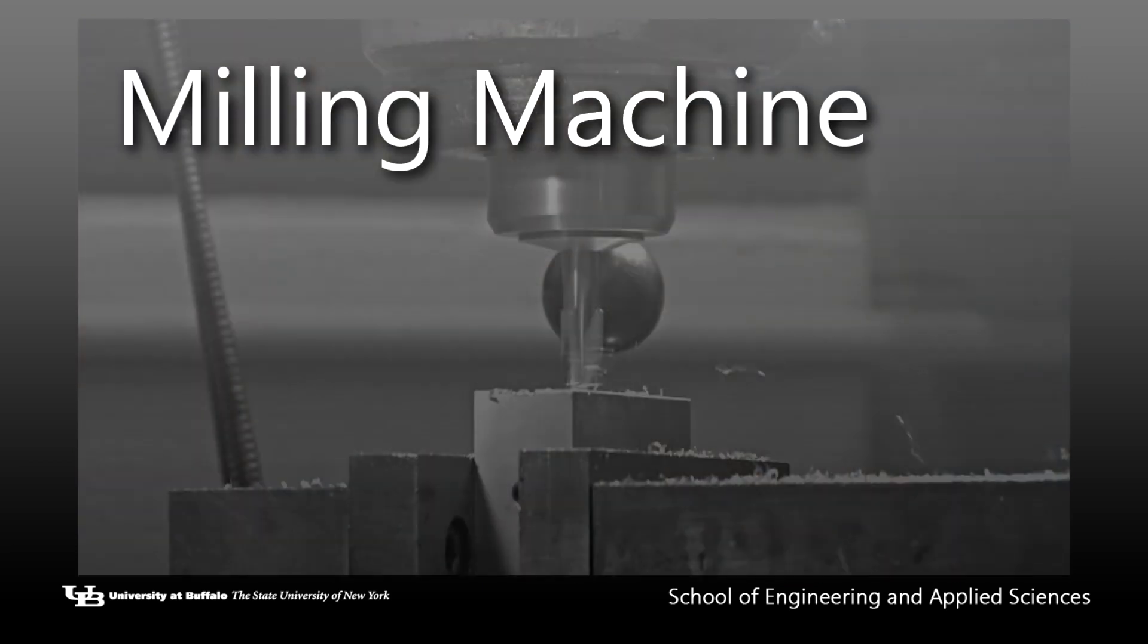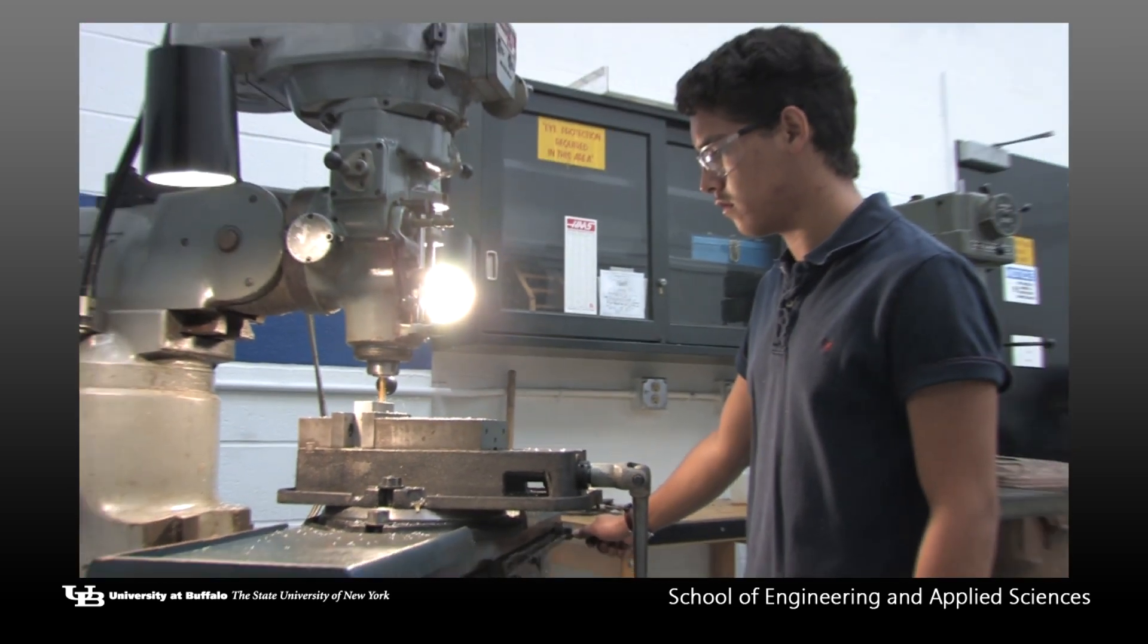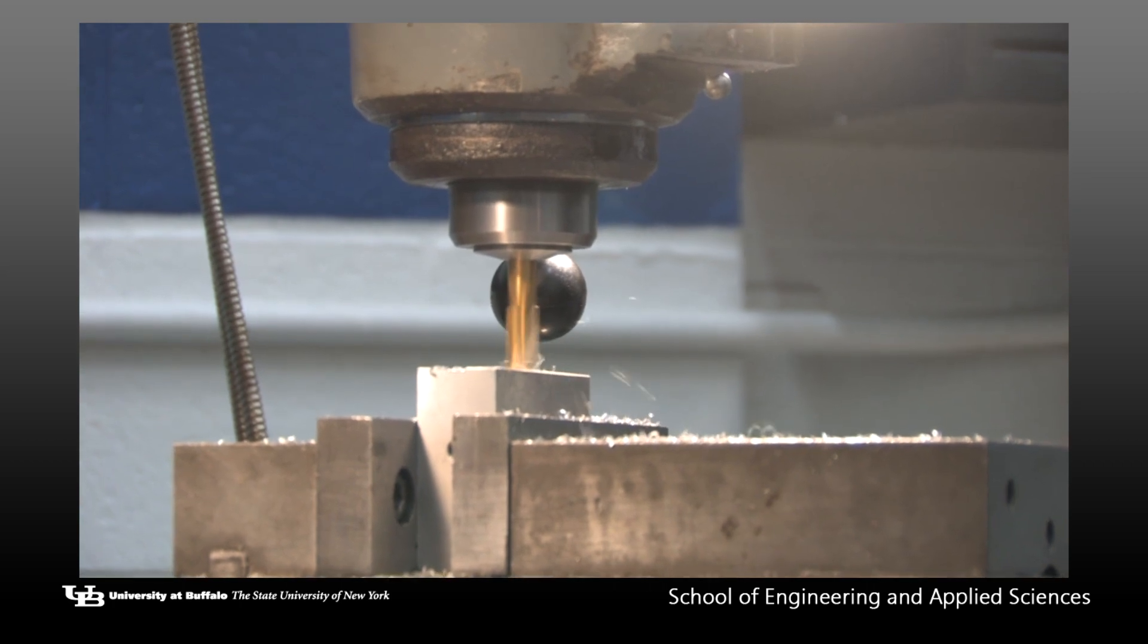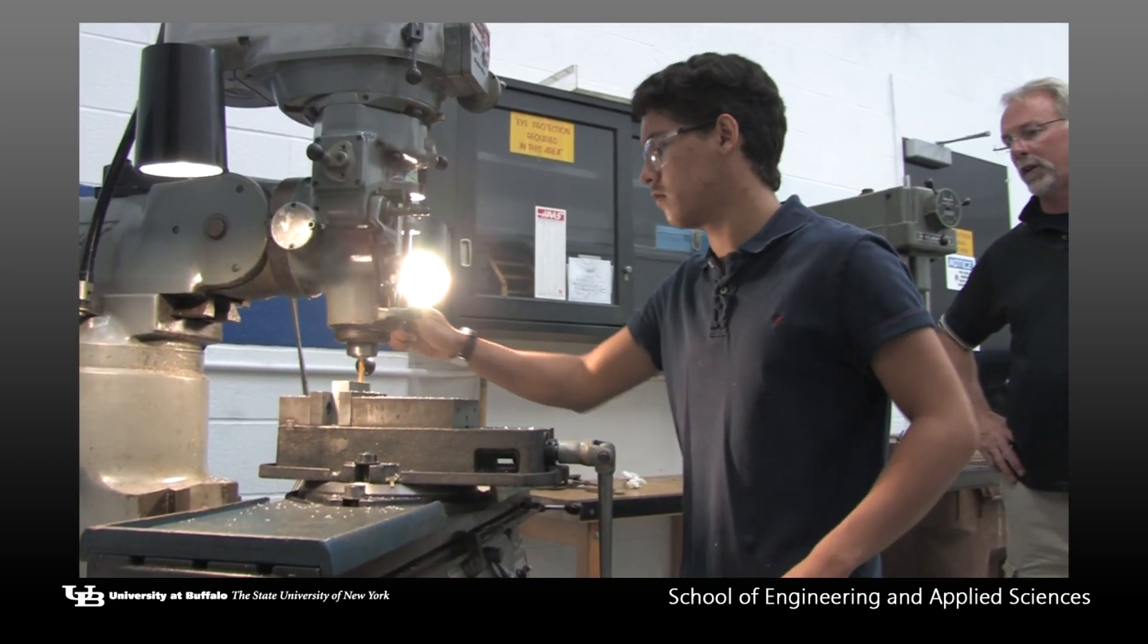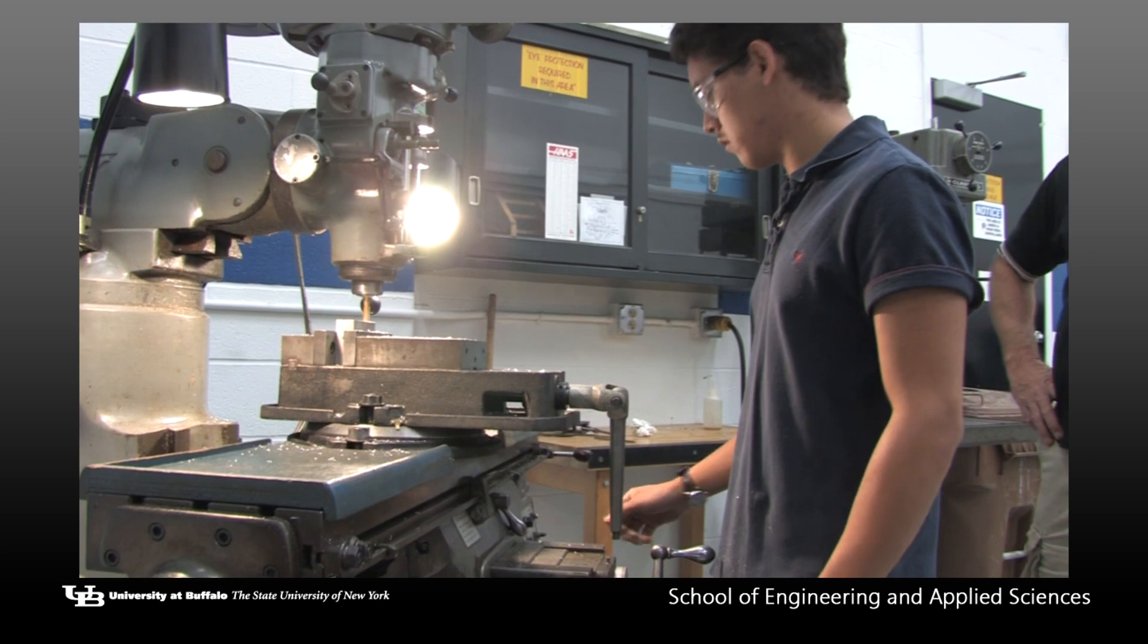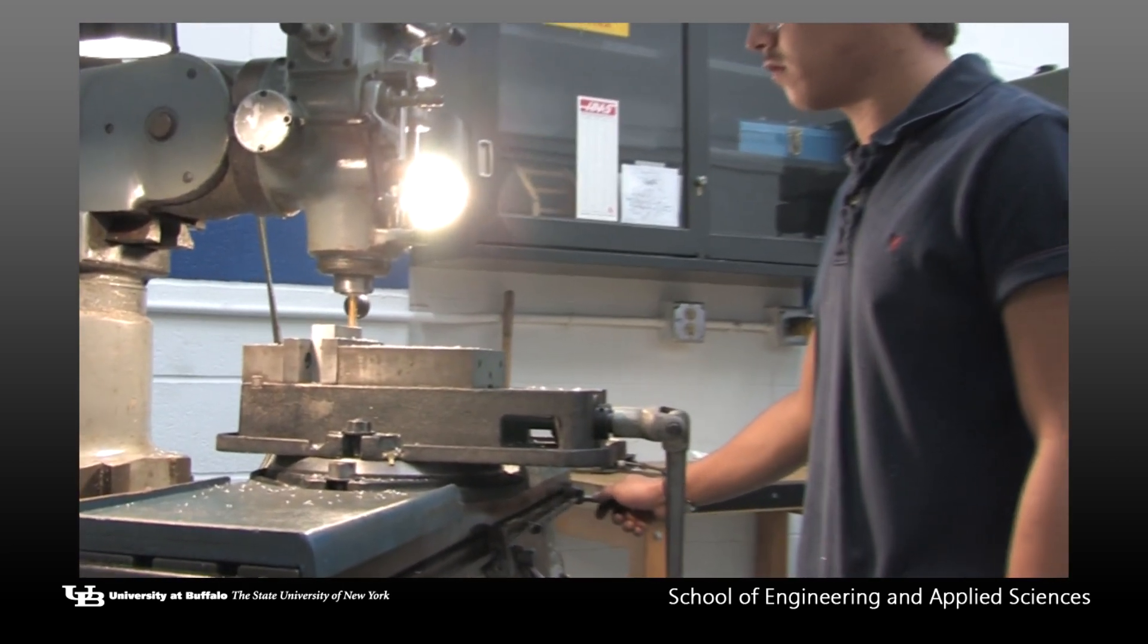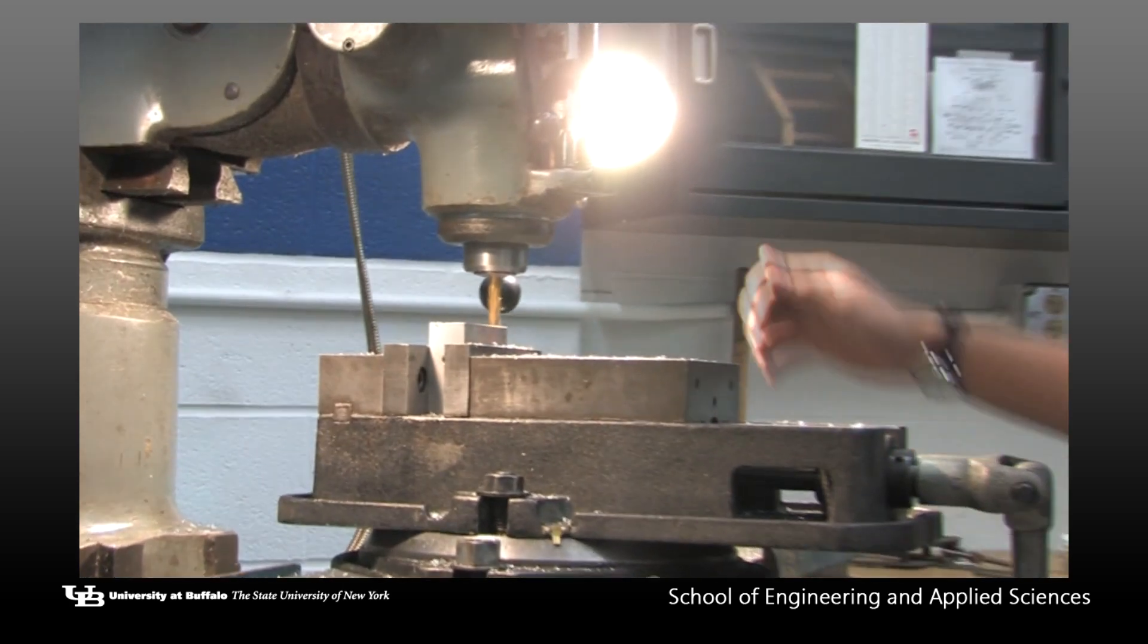Milling machines are used to make surfaces flat or parallel, cut slots and drill holes, as well as other operations. A milling machine's cutting tool rotates while the material is fixed to the table. Most of the Bridgeport milling machines in the shop are very similar, but again, always check with shop personnel if you are unfamiliar with any particular aspect of a machine.